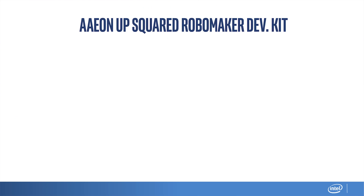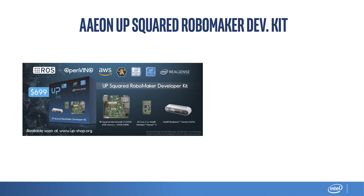Which leads me to this kit I was showing outside in the demo room — the Aeon Up-Squared RoboMaker Dev Kit. It has all of the ingredients I just showed on the previous slide. It's running ROS, the free and open source robotic control software, running OpenVINO, and it's fully compatible with AWS RoboMaker. The hardware includes a Movidius Myriad X vision processing unit, an Atom-based CPU, and a RealSense camera. You can get this whole bundle for only $699 — the camera alone is about $200. This is at a low price point, and for those just looking to get started in robotics, this is a really good place to start.